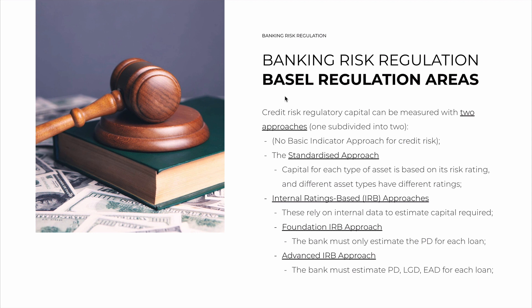Let's start with credit risk. Credit risk regulatory capital can be measured with two approaches, one of them subdividing into two — so technically three approaches. There is no basic indicator approach for credit risk. The first one is the standardized approach: we take the capital for each type of asset based on its risk rating, which is usually from an external agency. Different asset types have different ratings, and we multiply by the weight. There is a full table in the Basel reference guide.